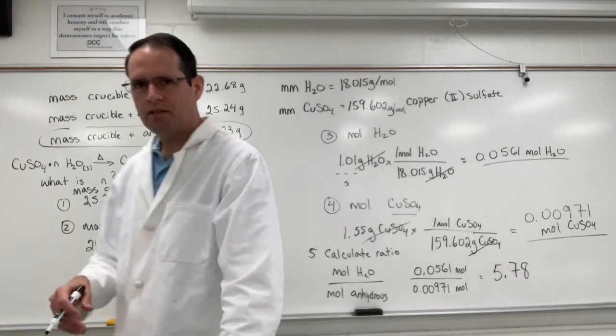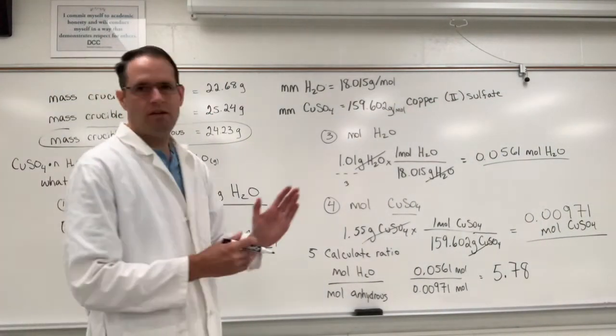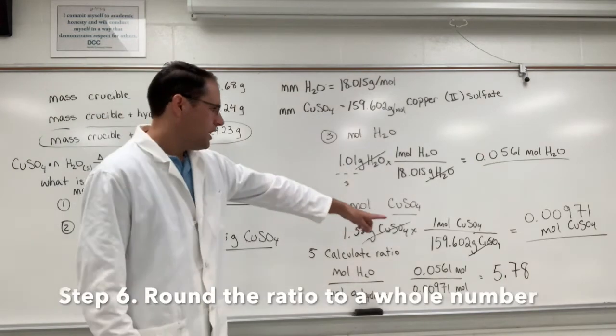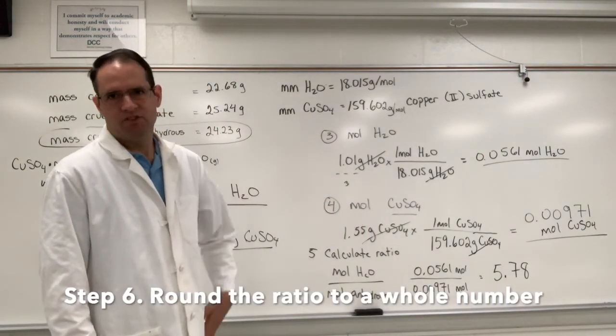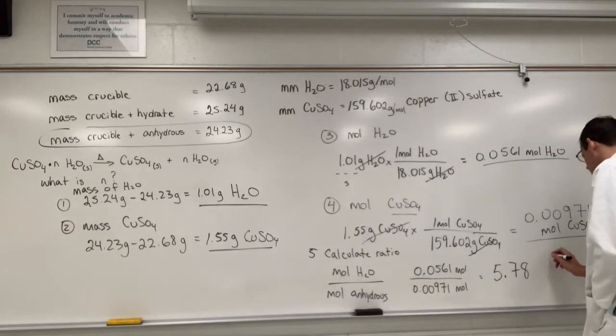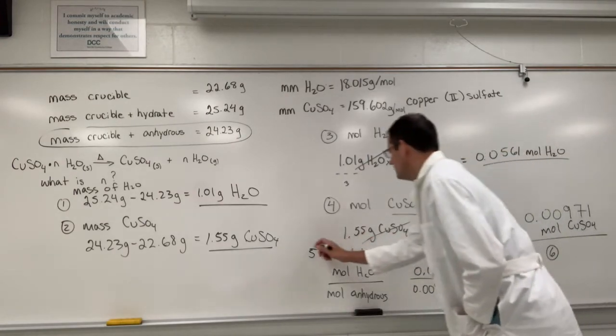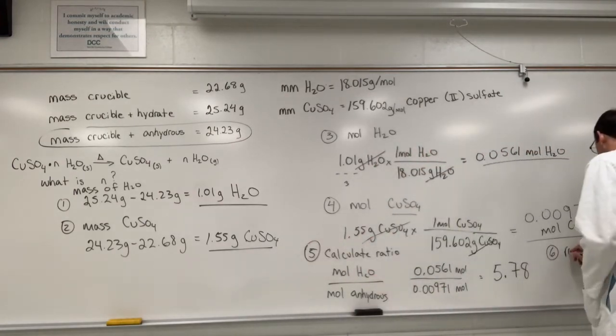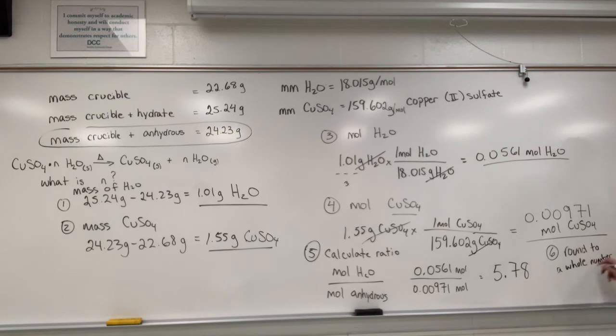And the last step here would be to round this to the nearest whole number. 5.78 is closer to 6. So we would round this to 6. So step 6 would be to round it to a whole number. 6. So my final answer is 6.